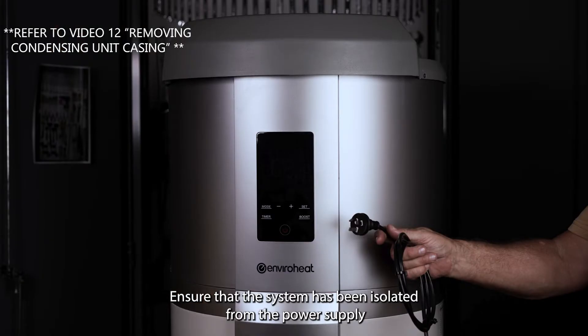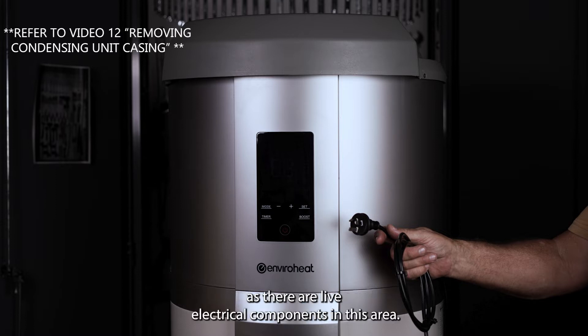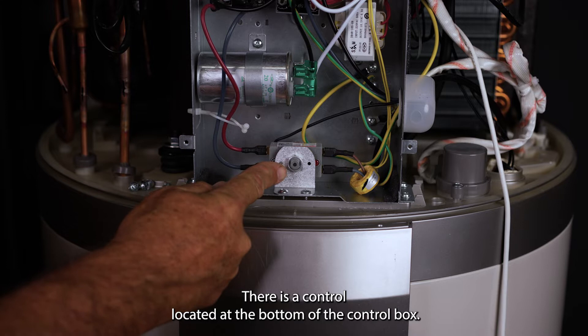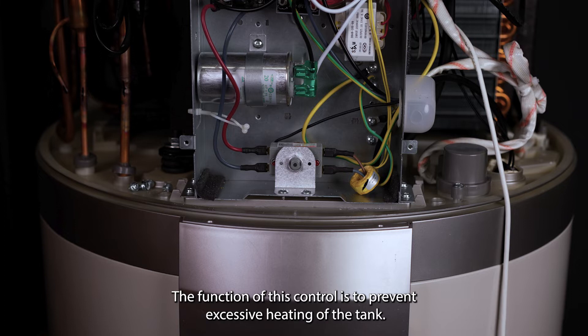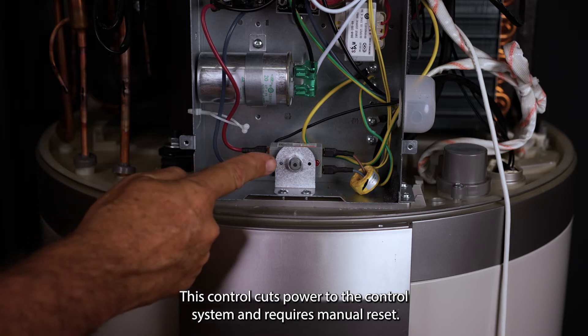Ensure that the system has been isolated from the power supply as there are live electrical components in this area. There is a control located at the bottom of the control box. The function of this control is to prevent excessive heating of the tank. This control cuts power to the control system and requires manual reset.